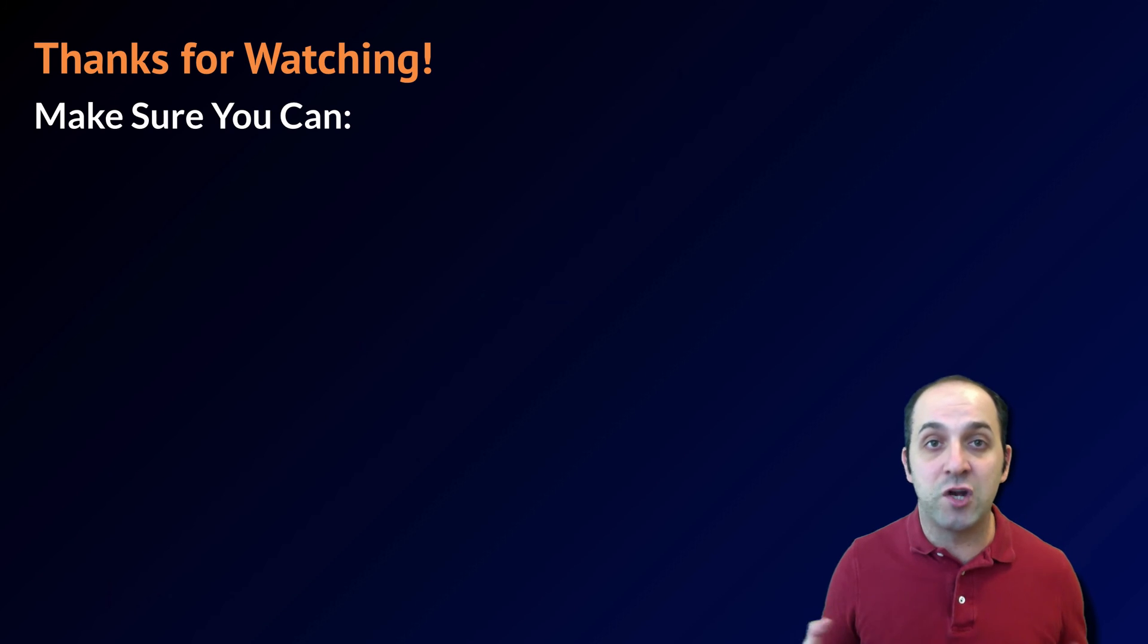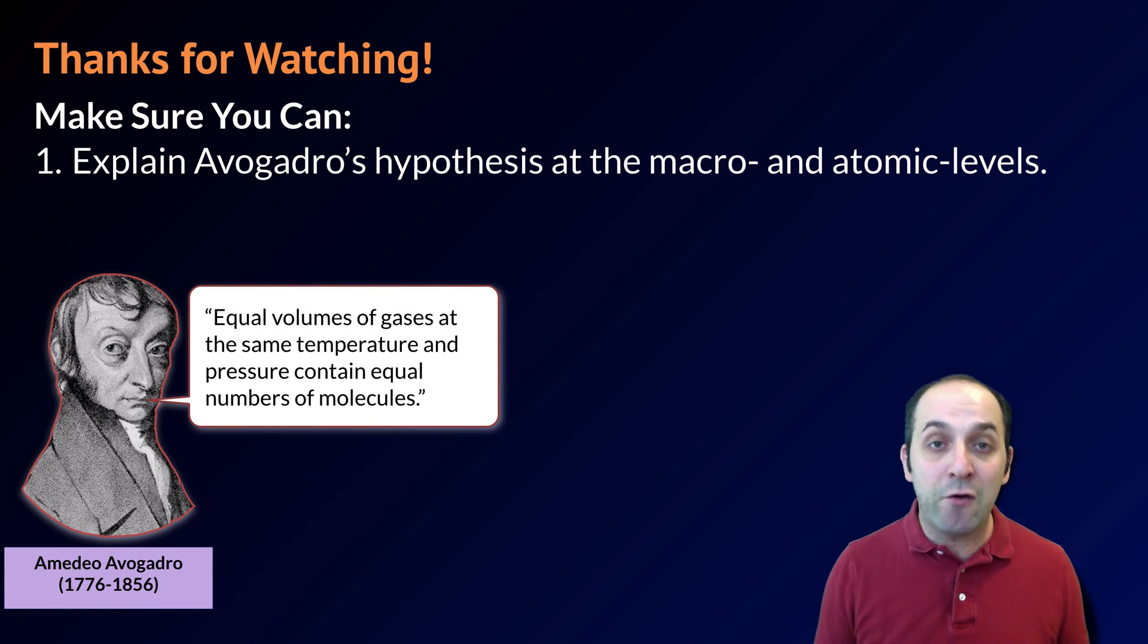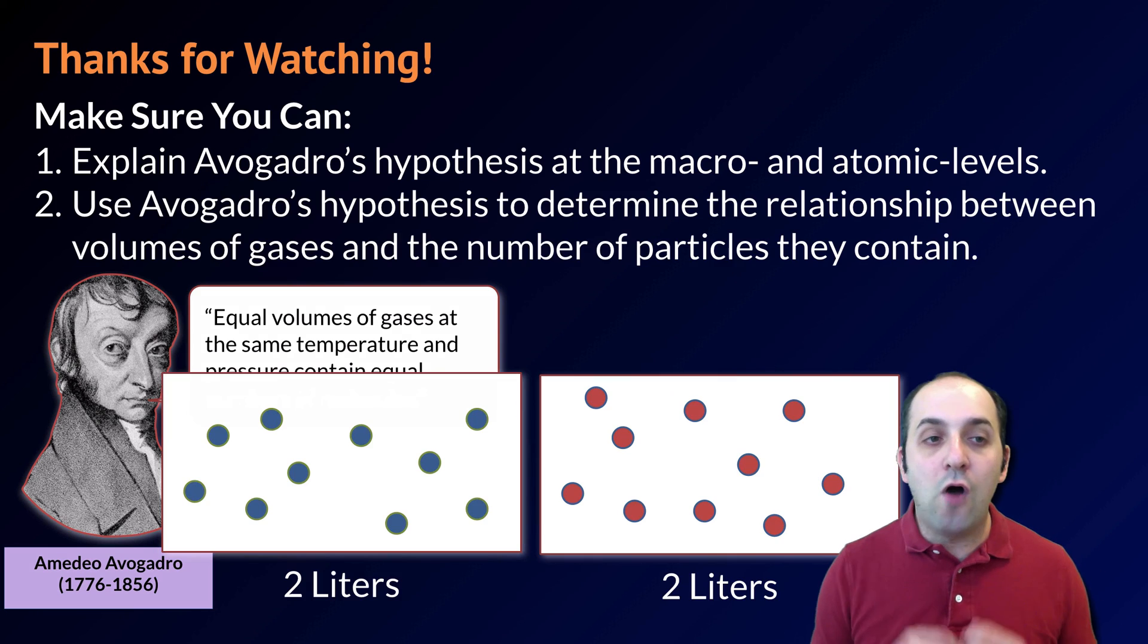Thanks so much for watching this discussion about Avogadro's hypothesis and how we can use it. Make sure that you can do the following here at the end. Make sure that you can explain Avogadro's hypothesis at both the macro and atomic levels, at the level of many liters of a gas and at the level of particles of the gas. Also make sure that you can use Avogadro's hypothesis to determine the relationship between the volumes of gases and the number of particles that they contain at the same conditions of temperature and pressure. If you can do both of those things, you're in great shape. If not, take a moment and write down any questions that you have. You can always leave them in the comments below the video, or you can always get in touch with me through the contact information in the info field. Thanks again for watching, I really appreciate it. Have a good day.